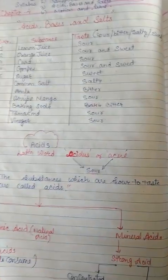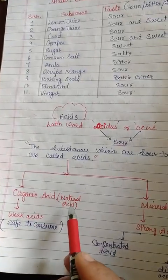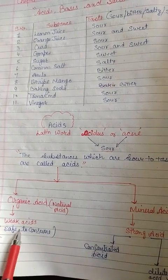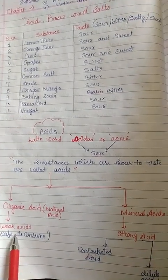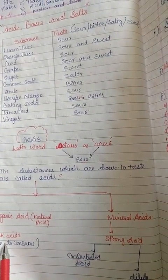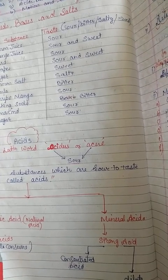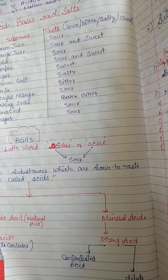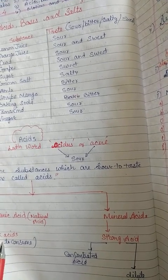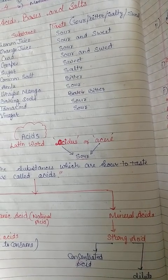Acids can be further categorized into organic acids and mineral acids. Organic acids are called natural acids, which are safe to consume and these are weak acids — they do not harm us. Some organic acids are present in natural sources: almond and citrus fruits contain ascorbic acid, lemons and oranges contain citric acid, and curd contains lactic acid.